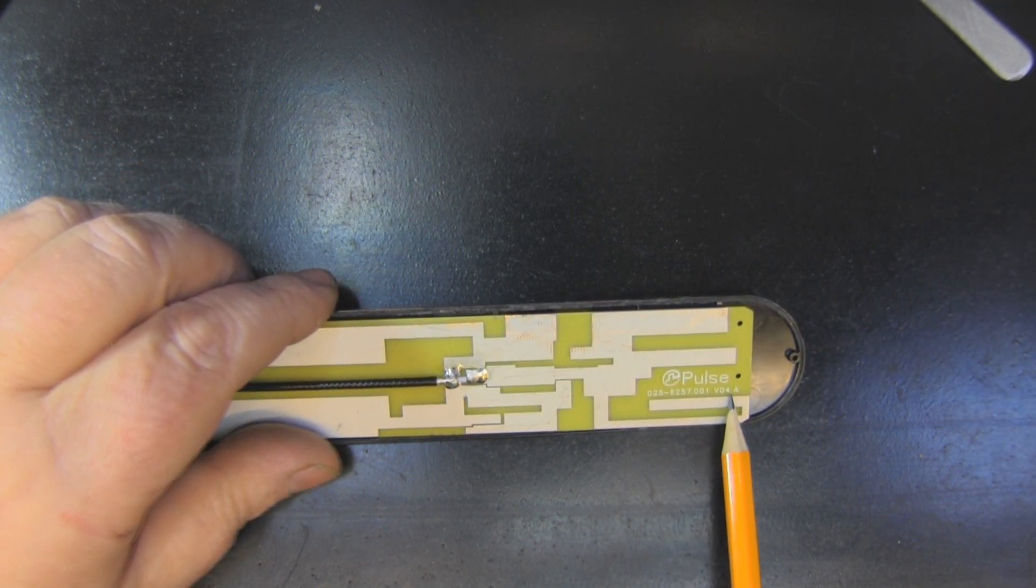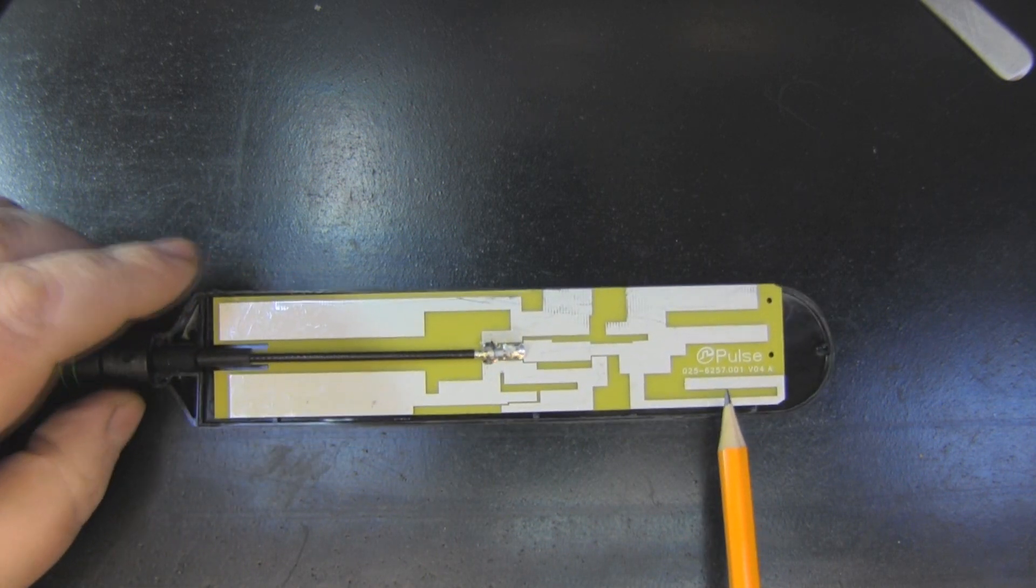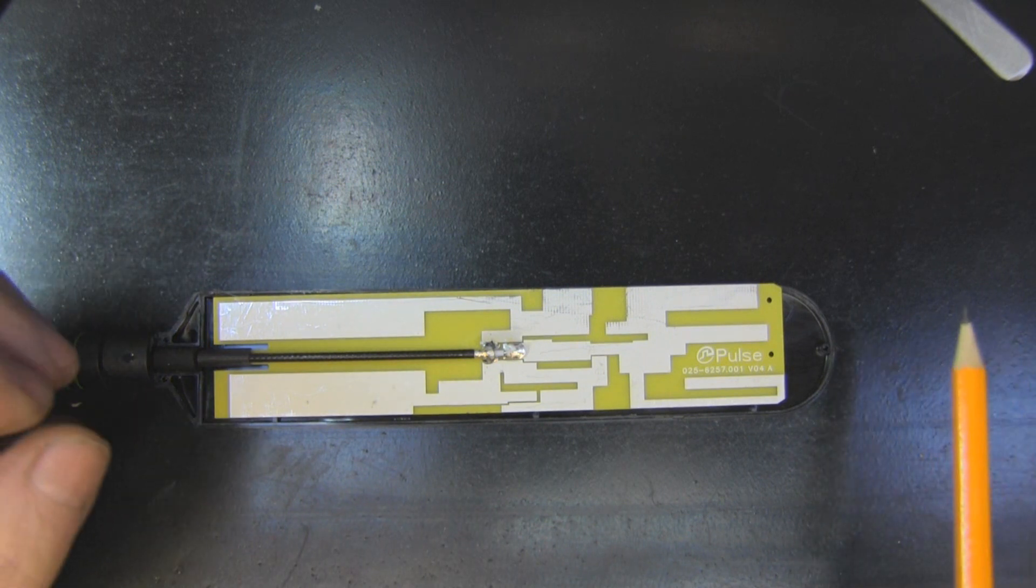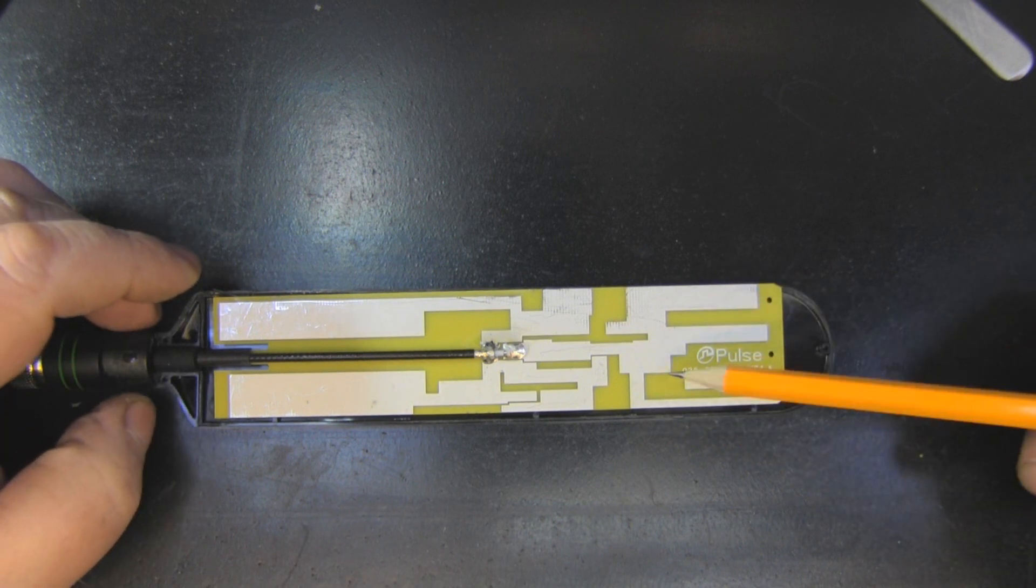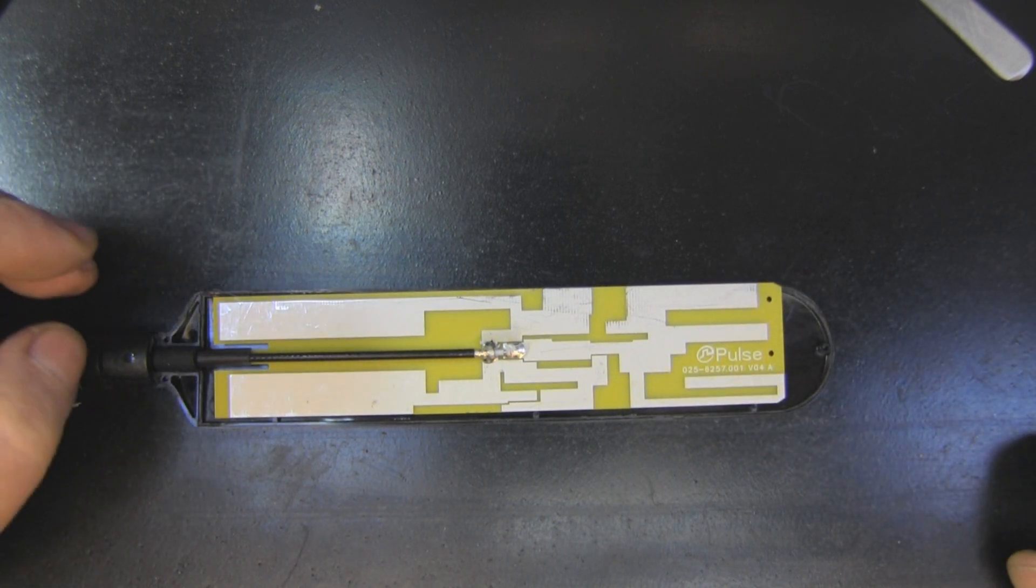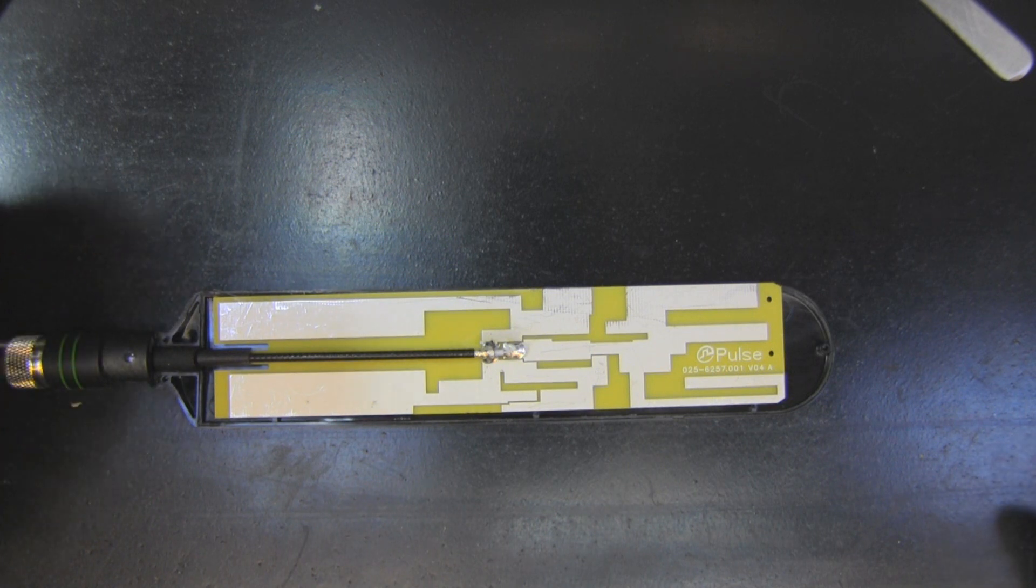We've also got a serial number here and I don't know if V04 stands for version four. Maybe it was originally a 3G antenna and when the 4G frequencies came out they just took the same design and just bolted extra elements onto this. Maybe it was designed from scratch, but it's certainly interesting when you see things like this.